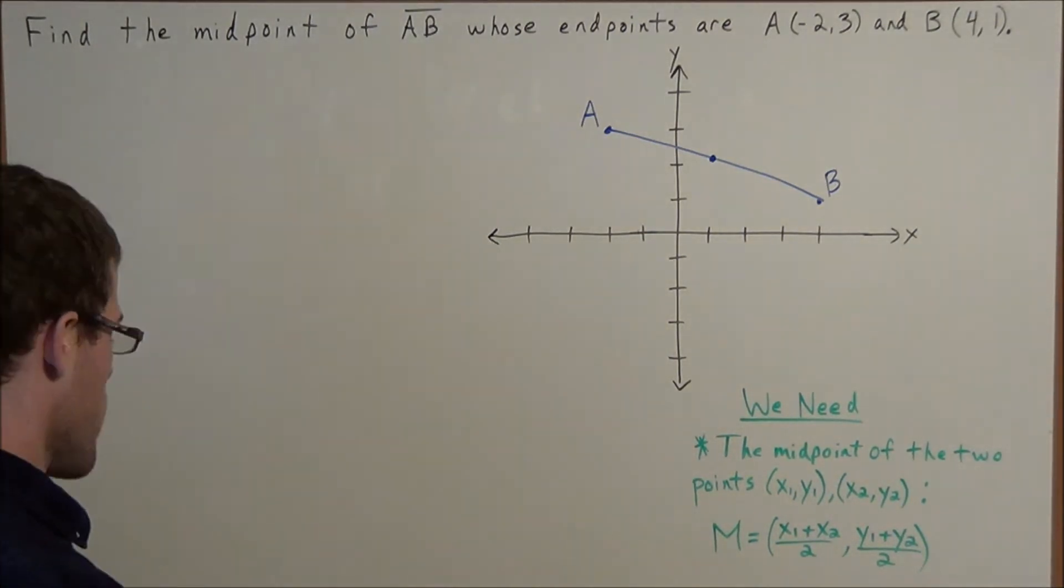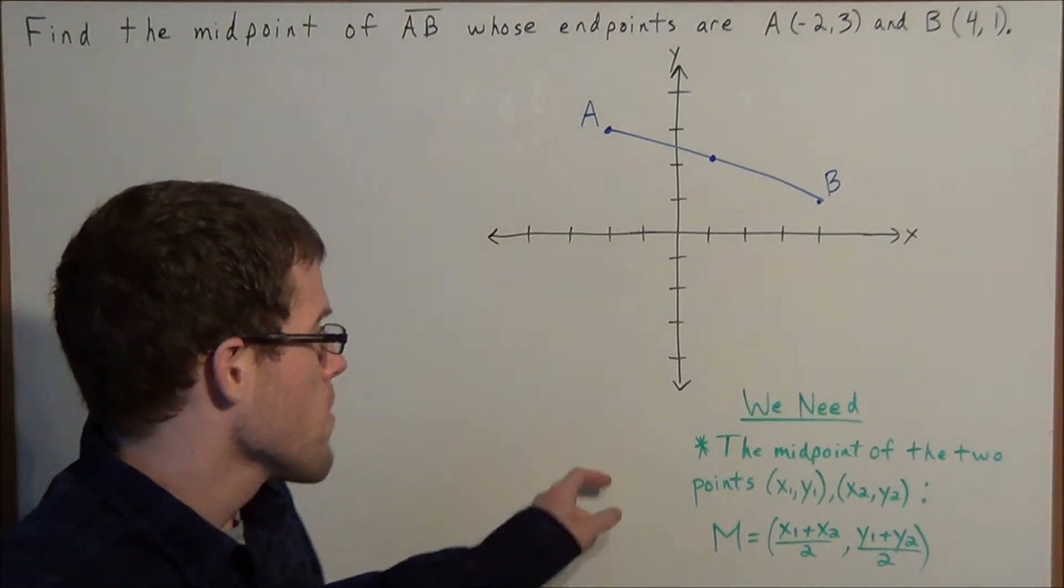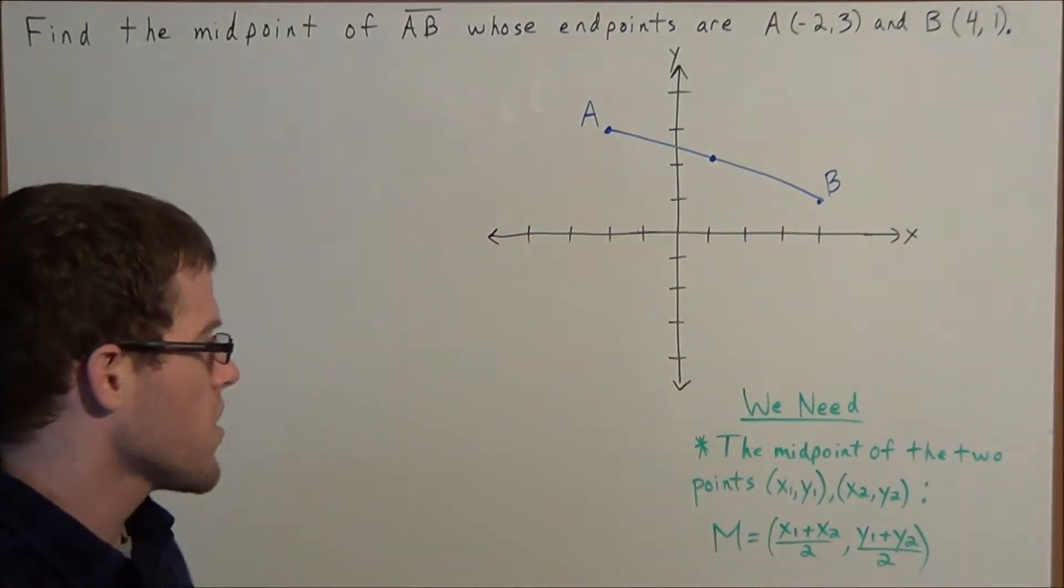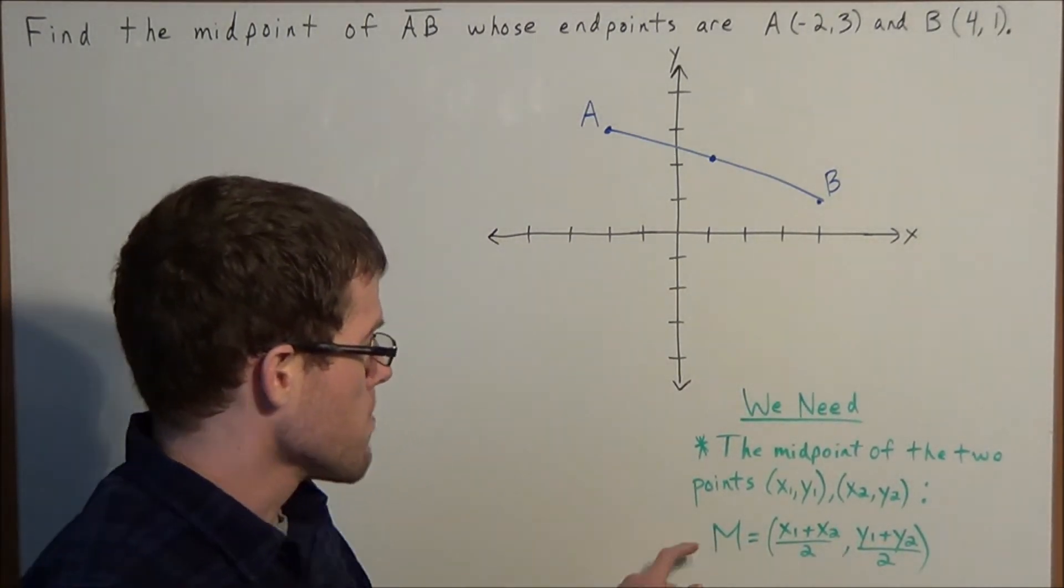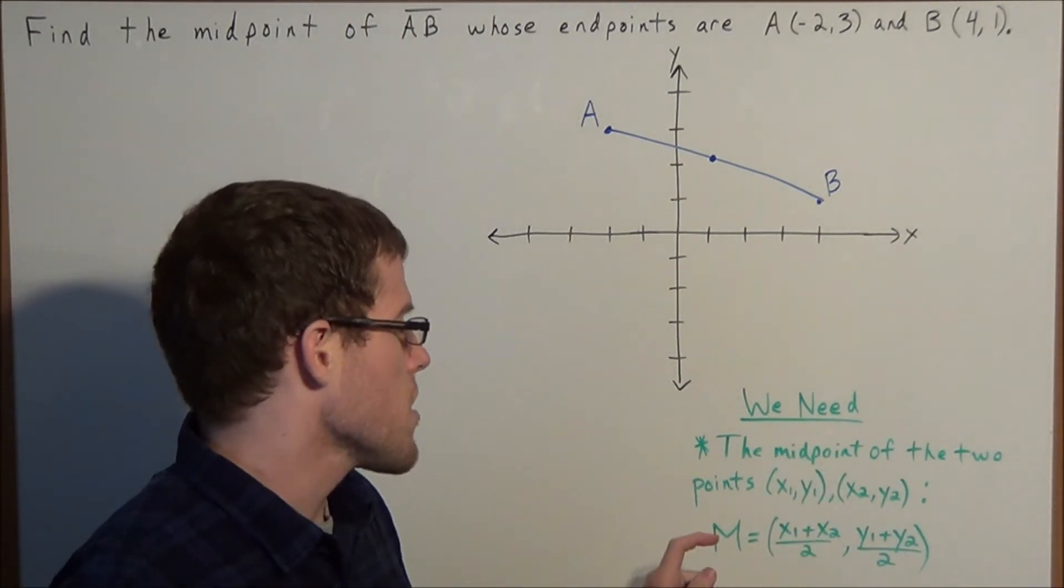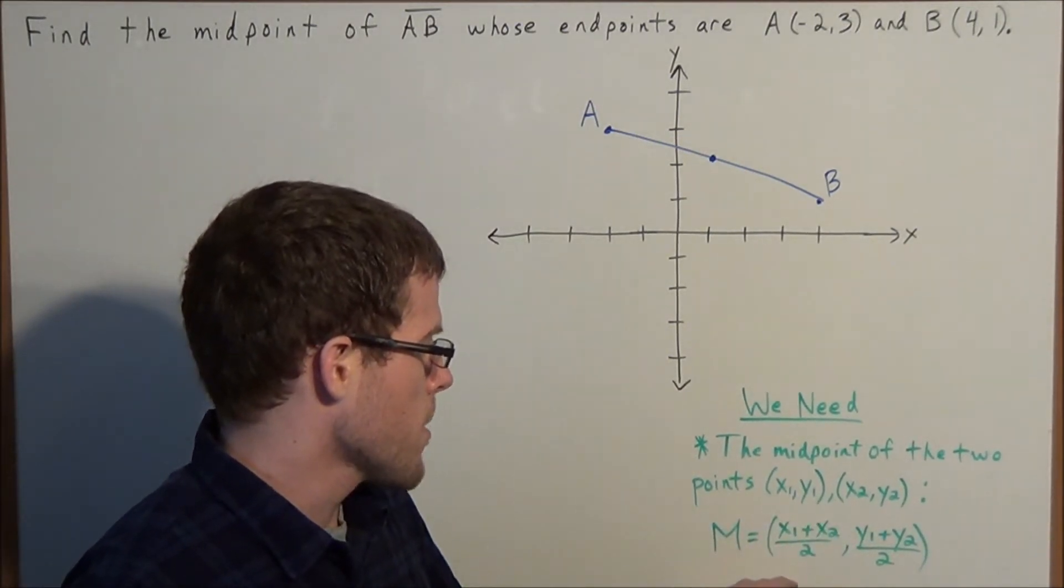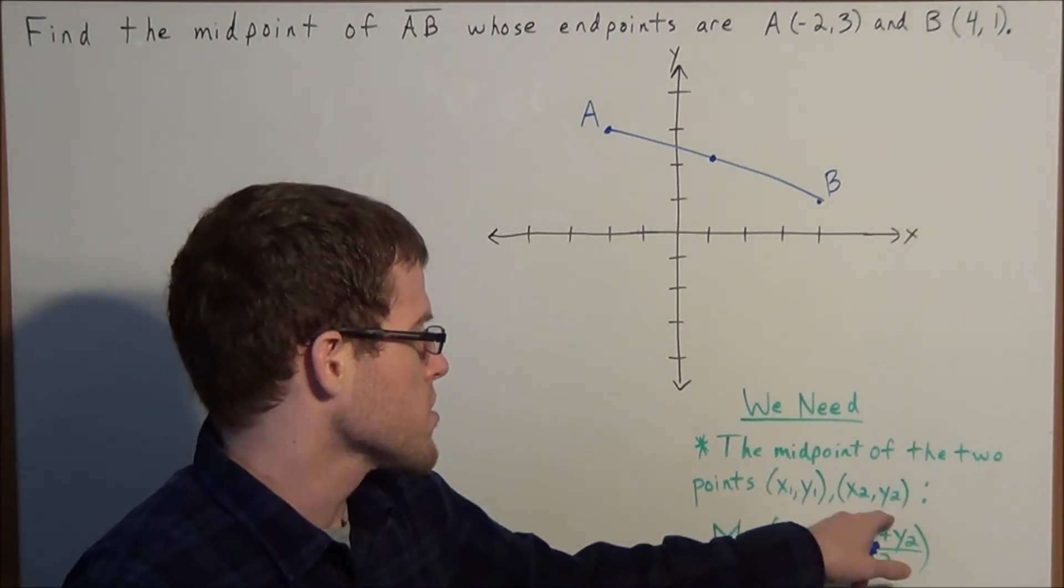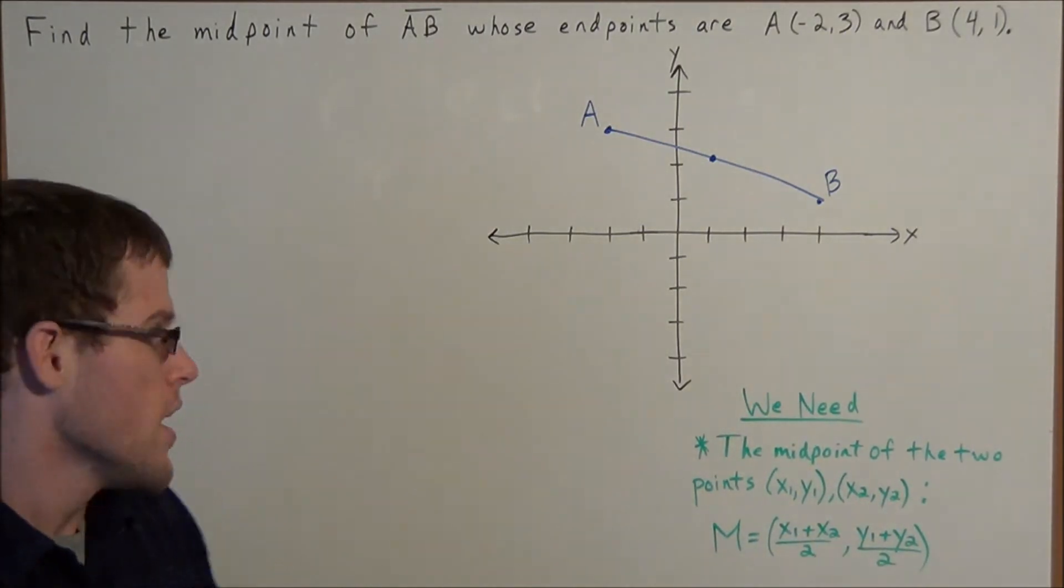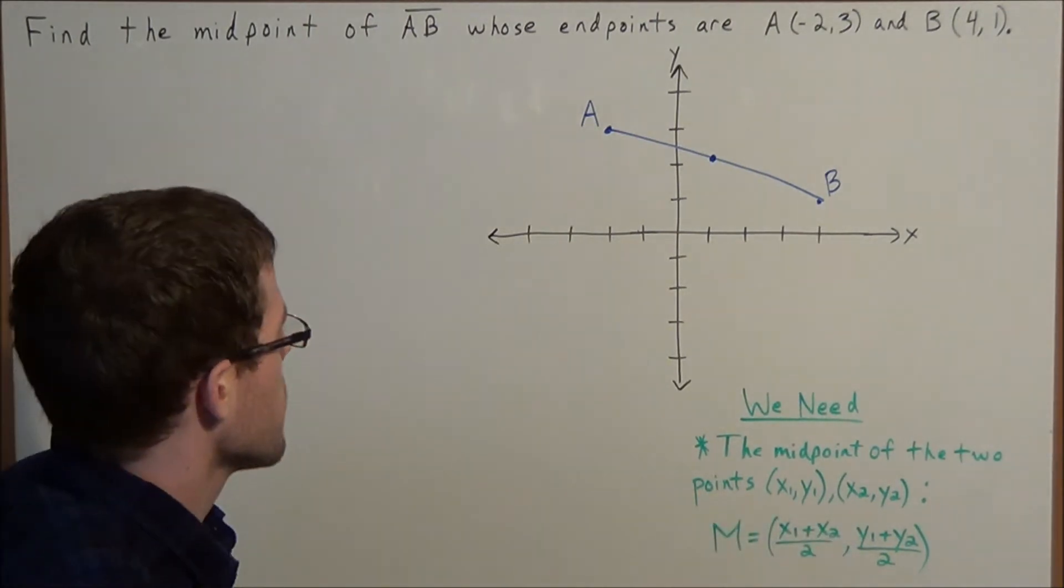So now to find the midpoint of line segment AB we're going to use the midpoint formula. When we have two points (x1, y1) and (x2, y2), the midpoint of these two points you can find using M = ((x1 + x2)/2, (y1 + y2)/2). In some sense you're just taking an average of the x coordinates and an average of the y coordinates.